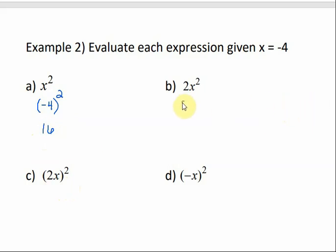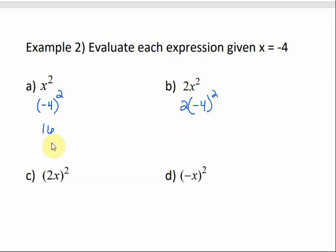For b, we have 2 and then x is being squared — not the 2. If we were in parentheses, both the 2 and the x would be squared, but it's not. Only the x is being squared. So we get 2 times negative 4 squared. Following order of operations, we do the exponent first. Negative 4 squared is 16, and then that gets multiplied times 2, which is 32.